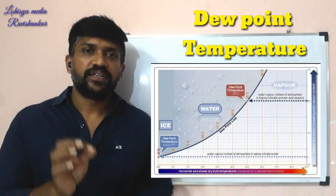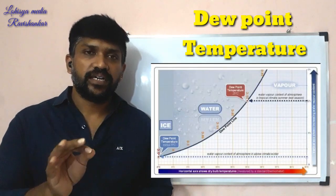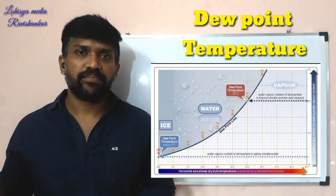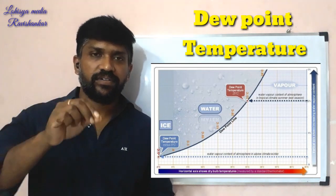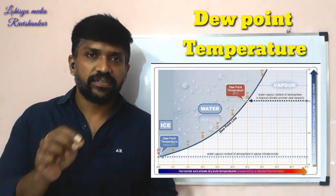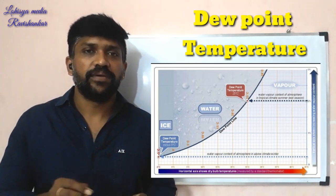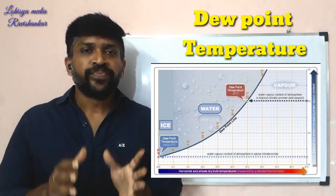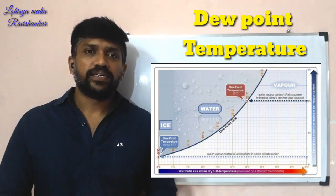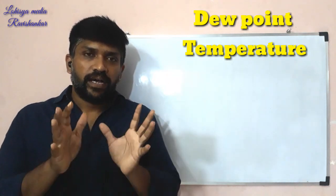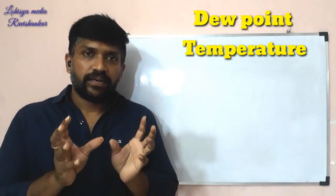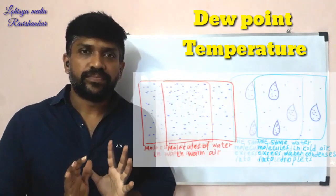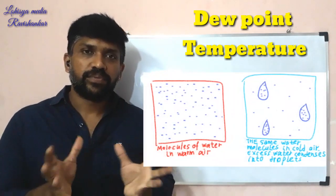In one area, it is around 20-something degrees. At the same time, the dry bulb temperature is equal — around 21-22 degrees. In the air, we have water vapors.